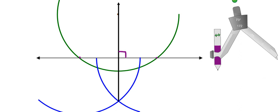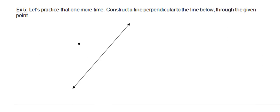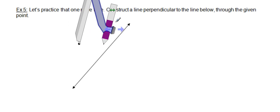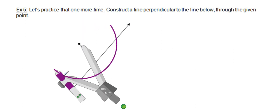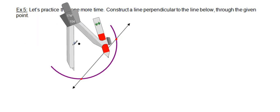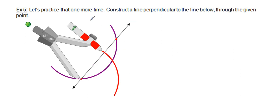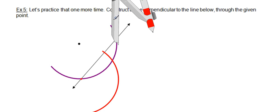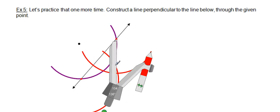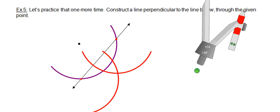Let's practice that again. Step one: place the compass point on the point you're constructing from and draw an arc that intersects the line in two places. Those two intersections become the focus of your next arcs — move the compass point to each red dot. It's really important not to change the compass setting between the two. Then grab your straightedge and connect the dots — there's your perpendicular.